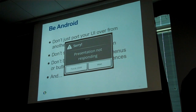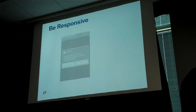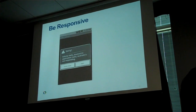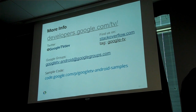If your application shows any of those error dialogs, users are usually annoyed. Be responsive, don't block the UI thread. For more information, you can find a lot more on our developers page at developers.google.com/tv — there are links to basically everything else. The best way to get technical information is go to Stack Overflow — it's really the best place to ask anything technically related to Google TV.